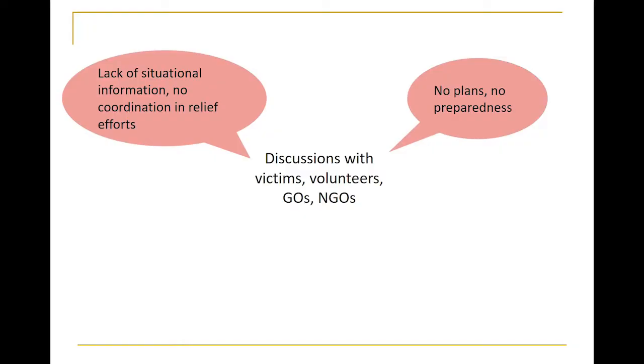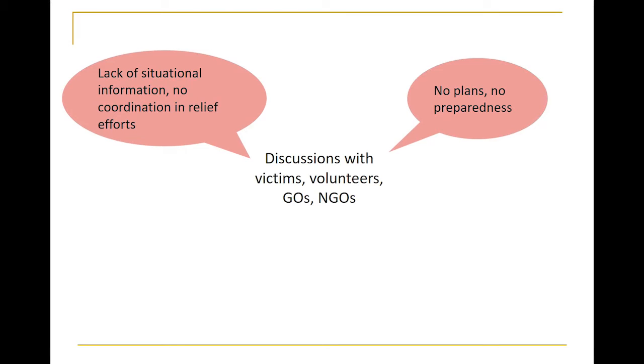What problems do these people face? We have seen two kinds of problems. One is when a disaster occurs — like an earthquake, a flood, an epidemic spreading, or even a terrorist attack — first there is huge confusion. There is no situational information, and there is no coordination in the relief efforts. Some NGOs told us that often enough resources reach the place, but no one knows what is needed where, so things get stagnated in airports or railway stations. Also, there is often no plan or preparedness.